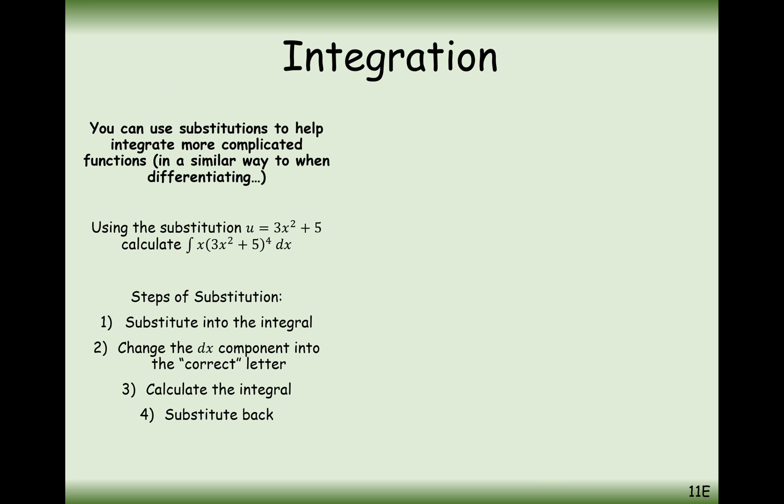Roughly the same techniques as we've been seeing in the first video, which is going to make them a little bit more difficult here. Using the substitution u equals 3x squared plus 5, calculate the integral of x bracket 3x squared plus 5, all to the power of 4. Let's go ahead and do that then.